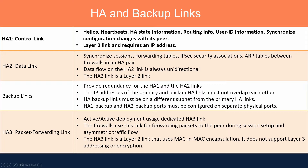Backup links provide redundancy for HA1 and HA2. Each HA1 and HA2 link has a corresponding backup link, so if either link fails, the backup link takes over. HA3 is the packet forwarding link and is only used when the firewall is configured in active-active deployment. It uses a dedicated HA3 link for forwarding packets to the peer during session setup or asymmetric traffic flow. The HA3 link is a layer 2 link using MAC-in-MAC encapsulation and does not support layer 3 addressing or encryption.